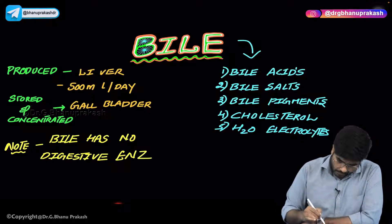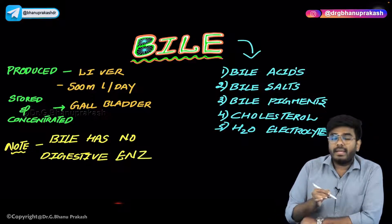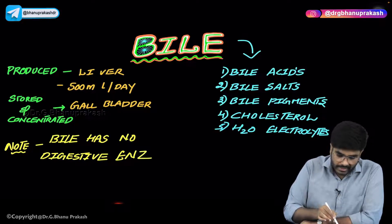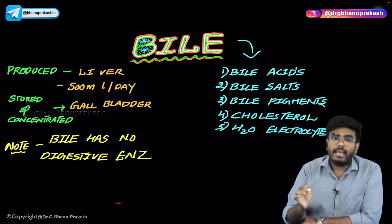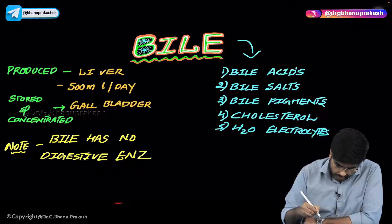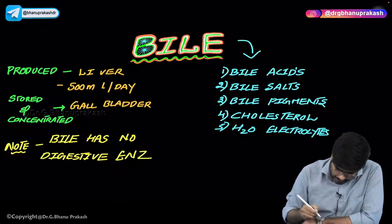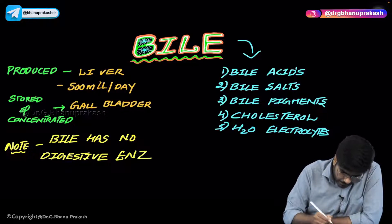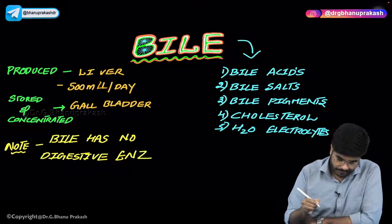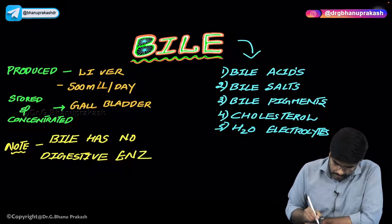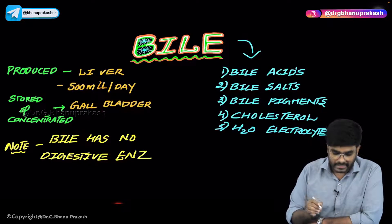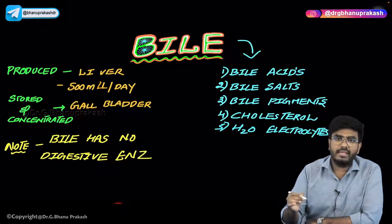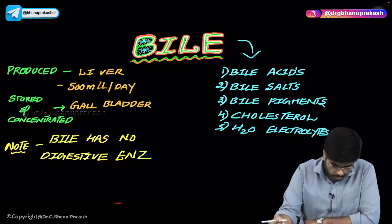Bile is produced in the liver. How much bile is produced every day? 500 ml — that's 500 ml per day, not liters. Where is bile stored? Bile is stored inside the gallbladder. The gallbladder is the place where bile is stored.